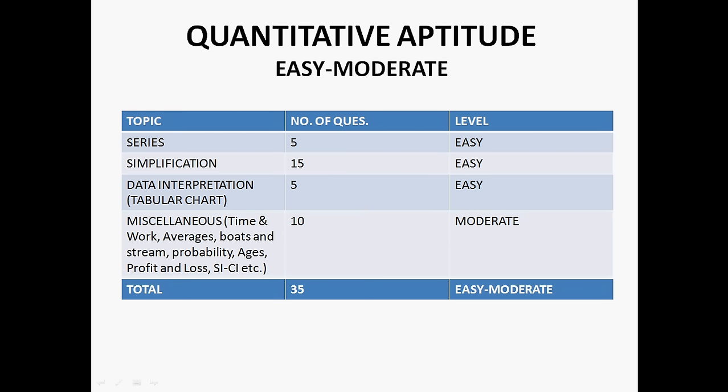There were 5 questions from series which was of easy level, and there were 15 questions from simplifications which was also easy. Only 1 DI was asked in quant which was in tabular chart form, and there were 5 questions from DI which was of easy level.